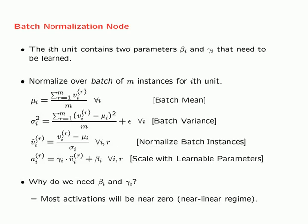Why do we need βᵢ and γᵢ? First, without these additional learnable parameters, the mean of all activations would be zero and most activations would be concentrated around zero. For example, with a tanh function, you would be operating in a near-linear regime. More generally, you want the neural network to decide which regime — how much non-linearity from the activation function — to use, since one of the key ways deep networks increase capacity is by having the right level of non-linearity in each layer. In this sense, γᵢ and βᵢ provide each layer and each node the ability to decide how much non-linearity they want.